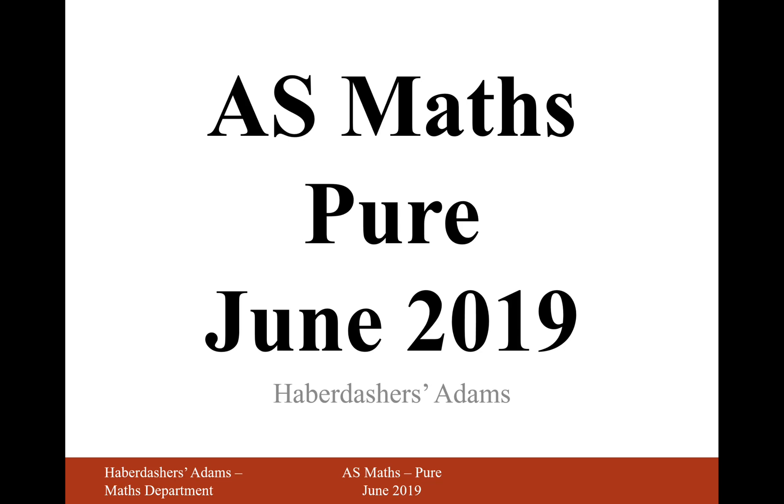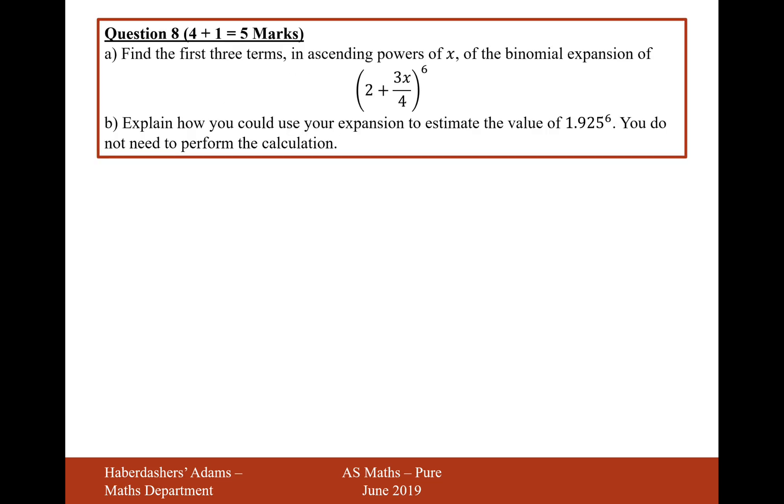Hello there and welcome to the June 2019 paper. Here we're looking at question 8. So in part A, it's find the first three terms in descending powers of x of the binomial expansion (2 plus 3x over 4) to the power of 6. Okay, let's get started on this one then.